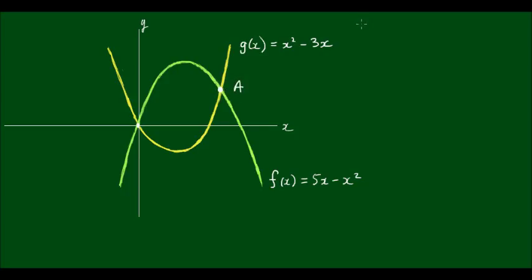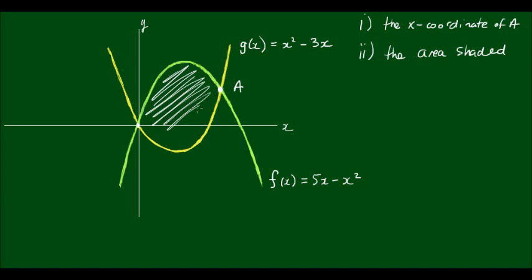And these parabolas intersect each other at the origin and at a point. And there are two parts of this question. First, I want to find the x-coordinate of point A. And the second part, I want to find the area that I'm about to shade. So this area here, between x equals 0 and the x-coordinate of point A.